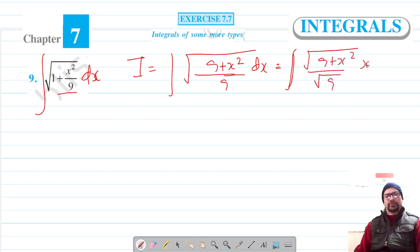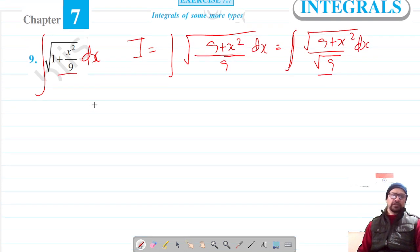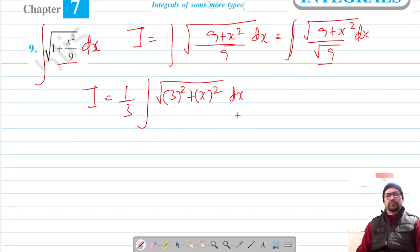And under root 9 is 3, so our integral is 1 by 3 integration of the root of—I can write it as 3 squared plus x squared—and the differential element is dx.